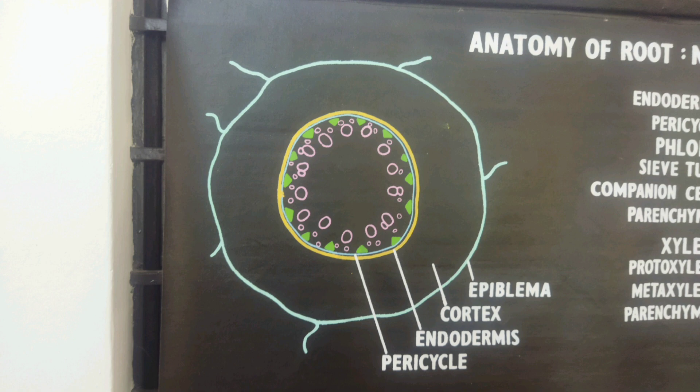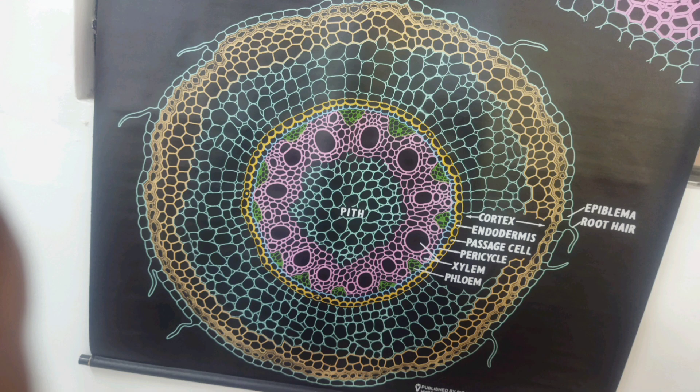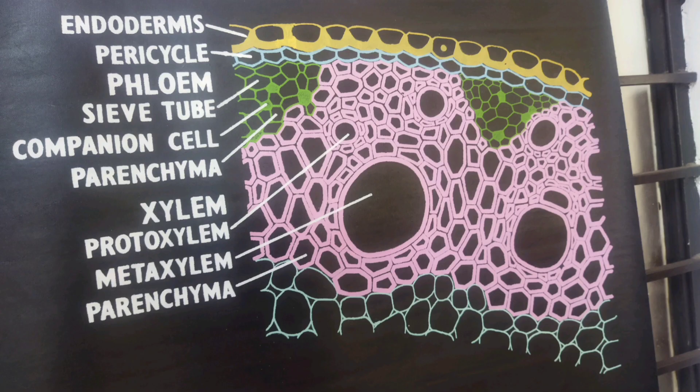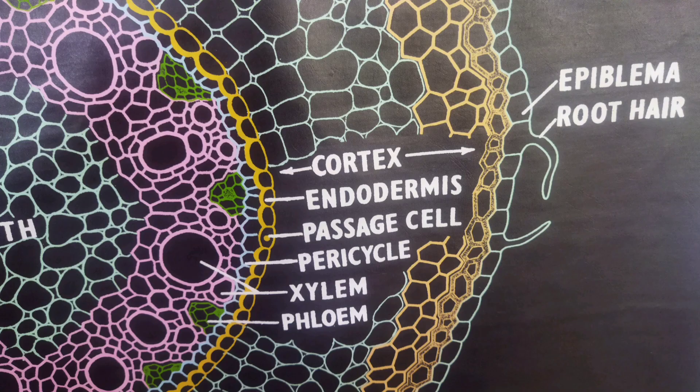Endodermis is the innermost layer of cortex. The vascular tissue is radial; the number of xylem strands is equal to that of phloem strands.